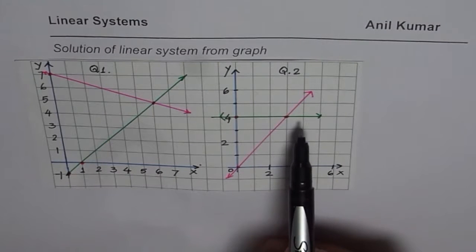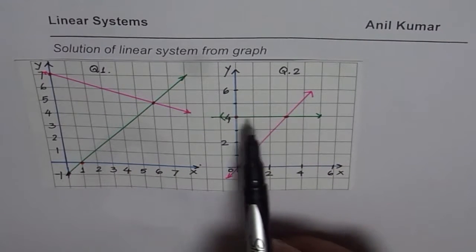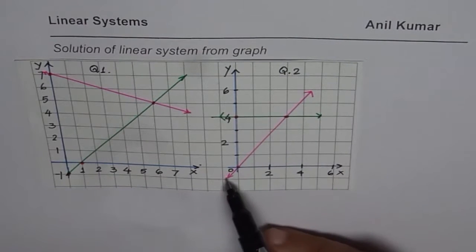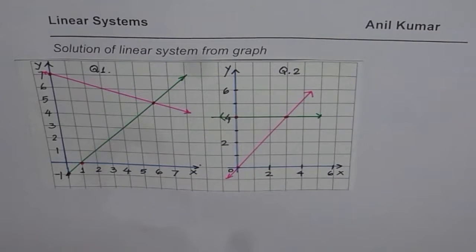The other linear system is represented by a horizontal line and a direct variation line which goes through the origin. You need to find solution of the other linear system also.